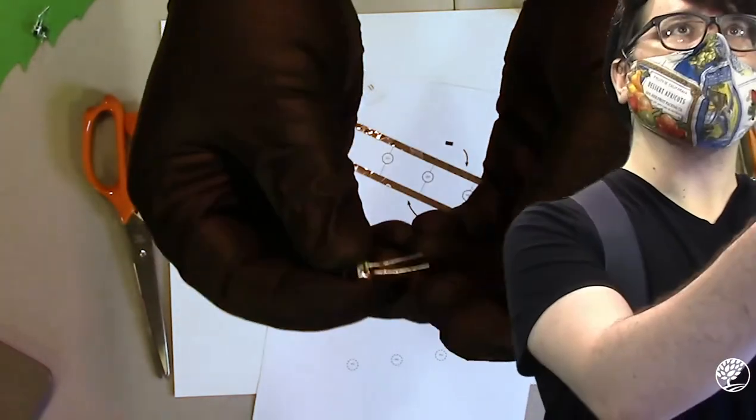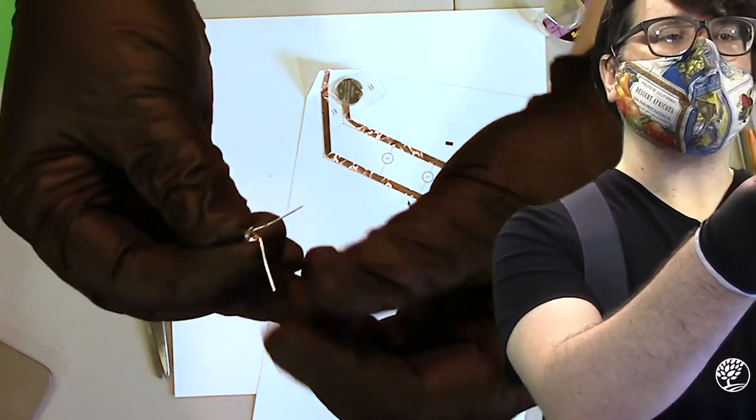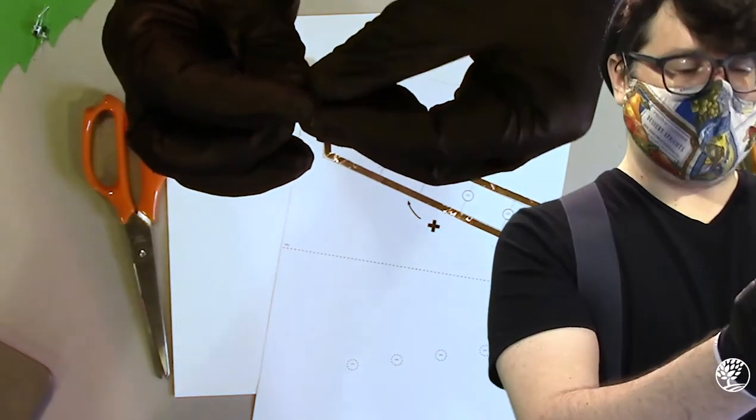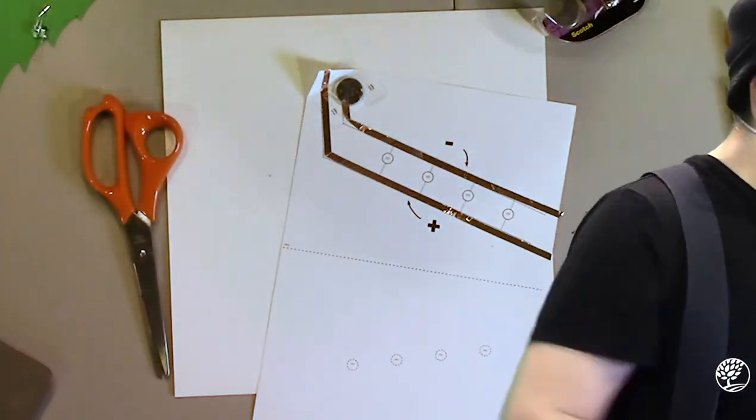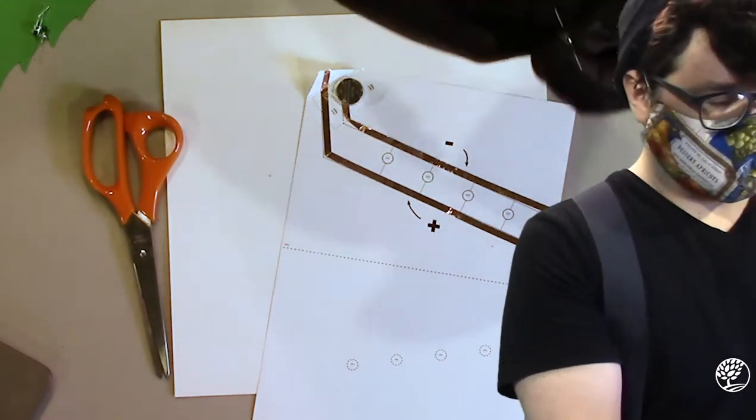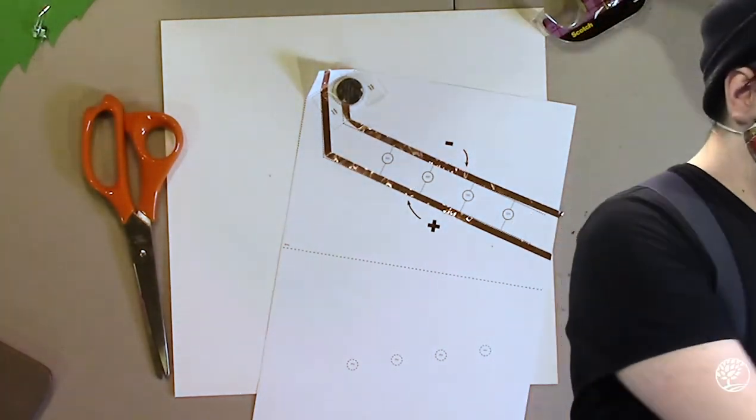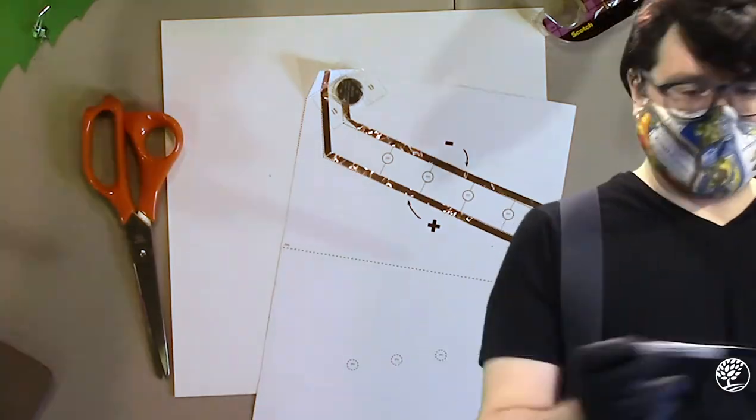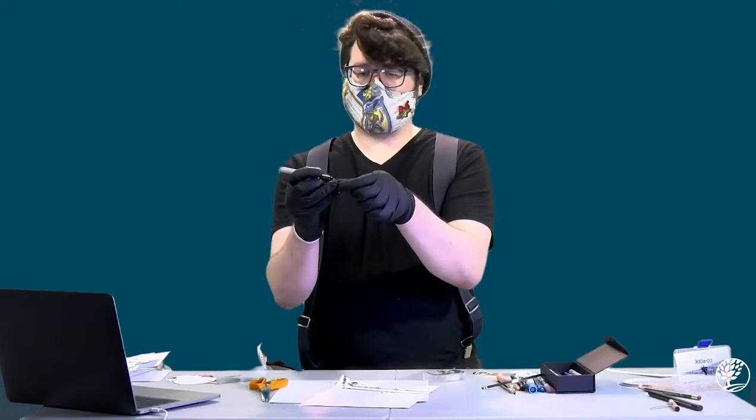Now, when you press down on the folded over portion, electricity will flow through your circuit. We're going to take one of your LEDs and splay out the two leads in opposite directions, making sure to remember which one is longer. I often find it really helpful to make a small mark on the lead that is longer or the positive lead with a permanent marker.